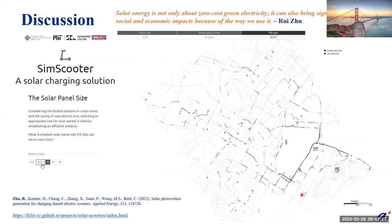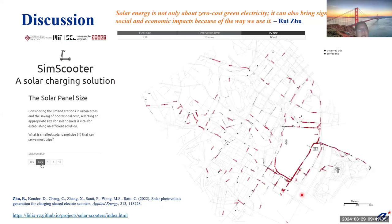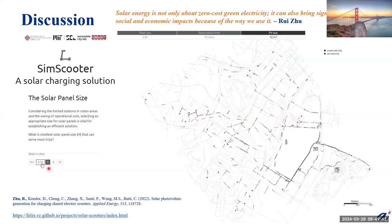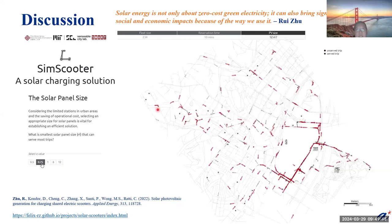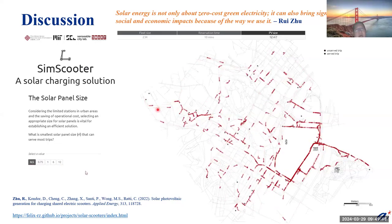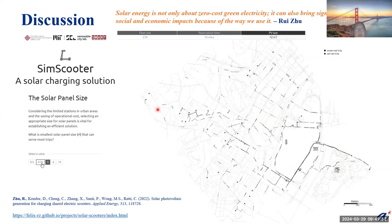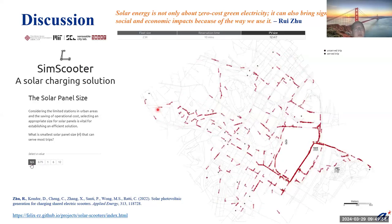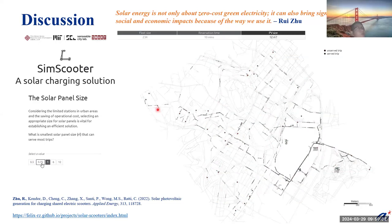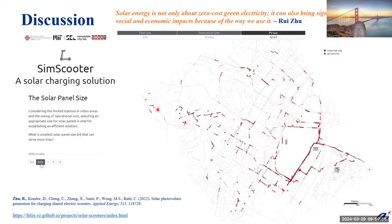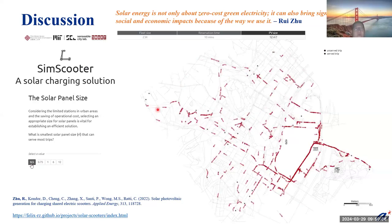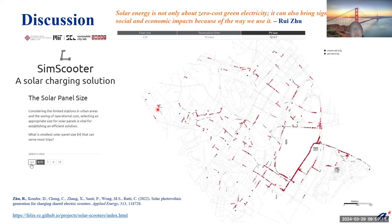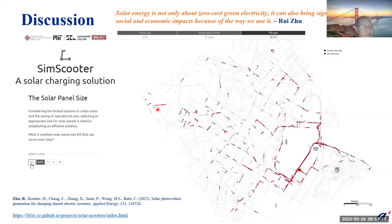We also built a web page that allows users to change input parameters such as reservation time and PV size to see the system performance. In this study, I argue that solar energy is not only about the various cost of electricity — it can also bring significant social and economic impacts because of the way we use it. Also, because of this project, a company in California was very interested in this solution and wanted to build such a solution with shared parking service to make a test in the United States.